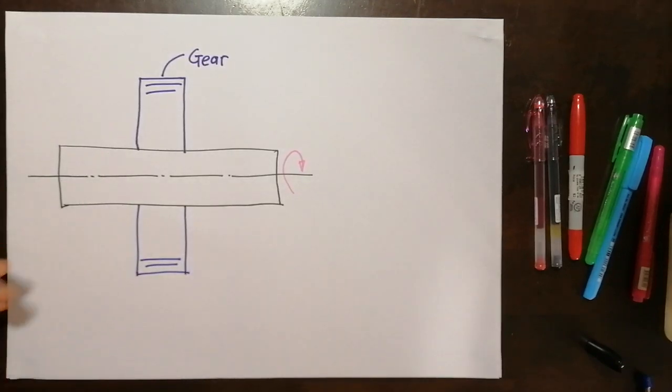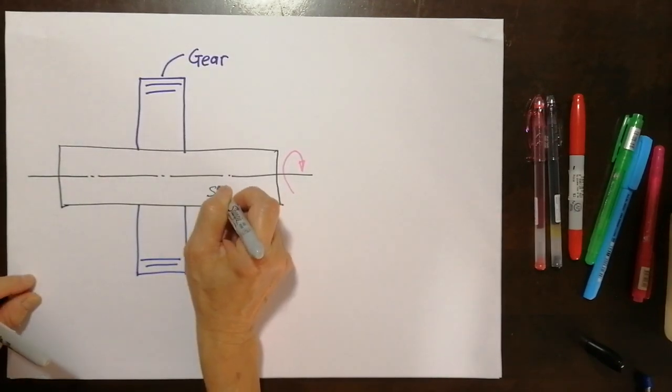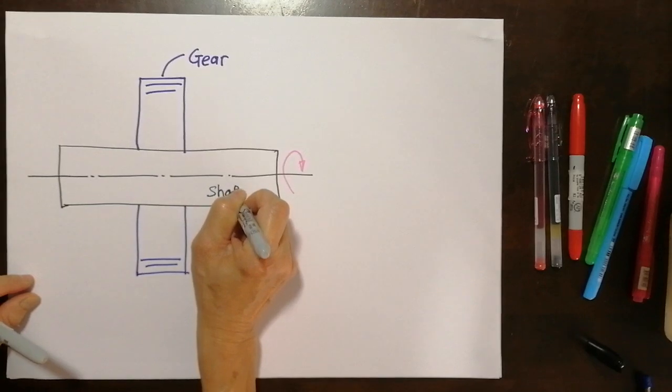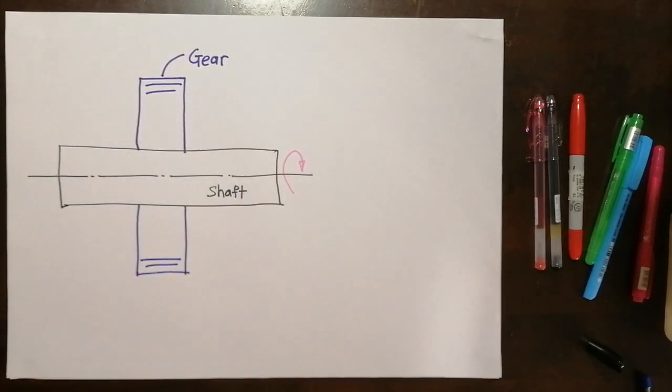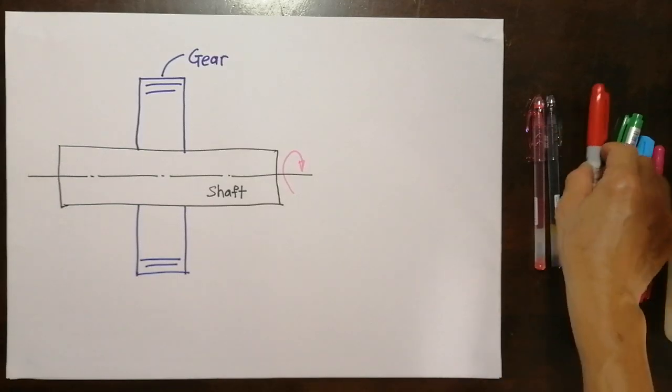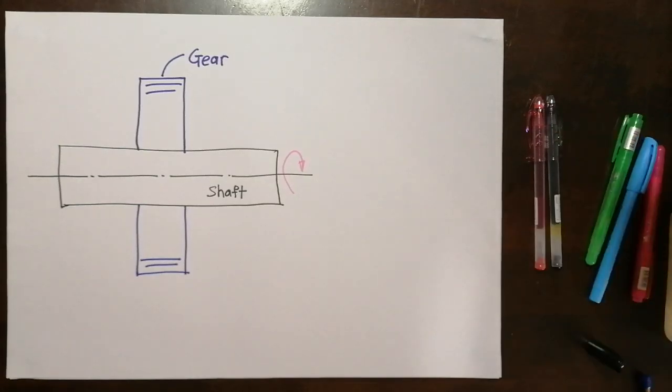And I also want to say that this is the shaft. So when the shaft was to turn the gear, it couldn't turn it. Both are round, both are circular.